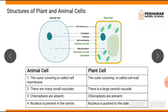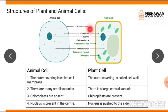Now we will talk about the differences between plant and animal cells. In animal cells, the outer covering is called cell membrane. In plant cells, if you can see in the diagram, there is a double line — the outer covering is a cellulose cell wall, and inside it is the cell membrane. So the outer covering in animal cells is cell membrane, while in plant cells it is cell wall.